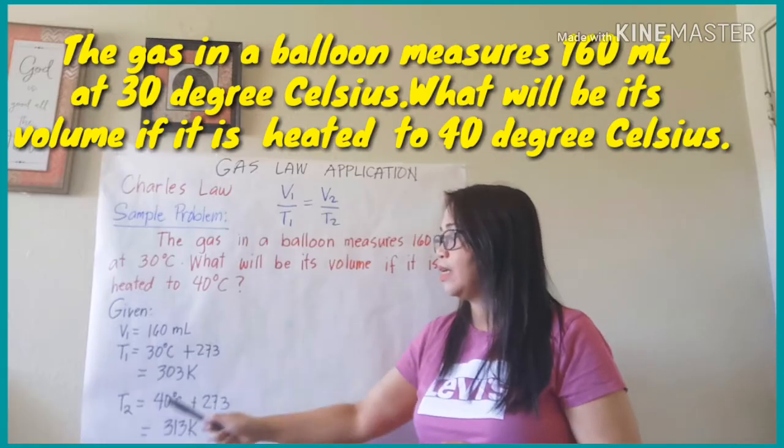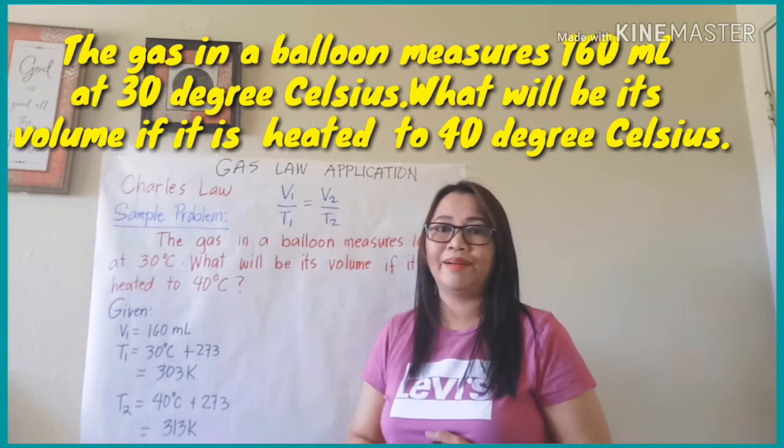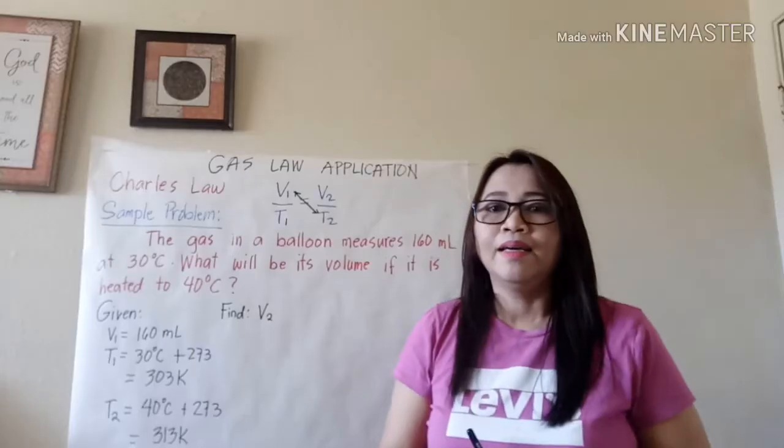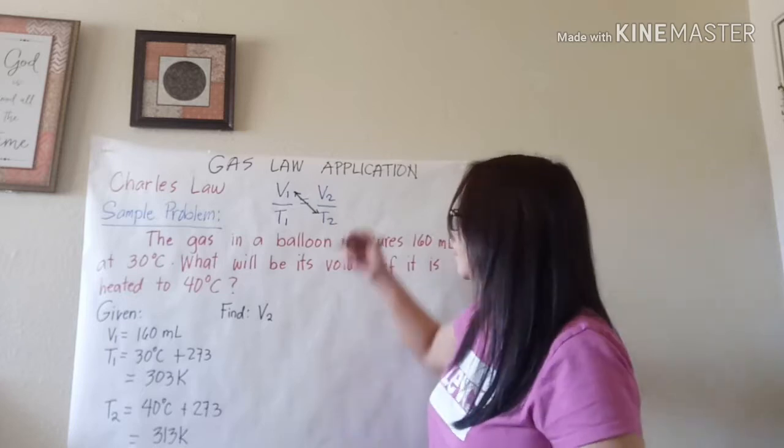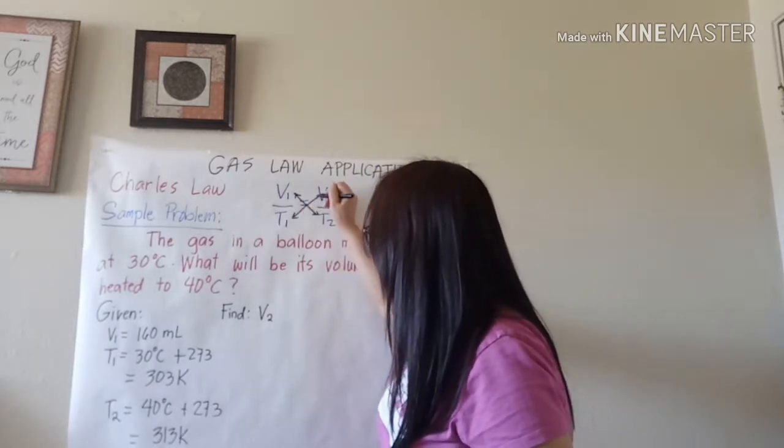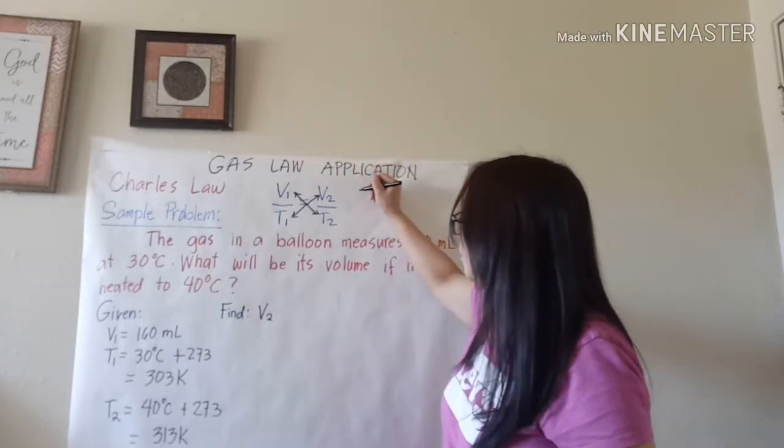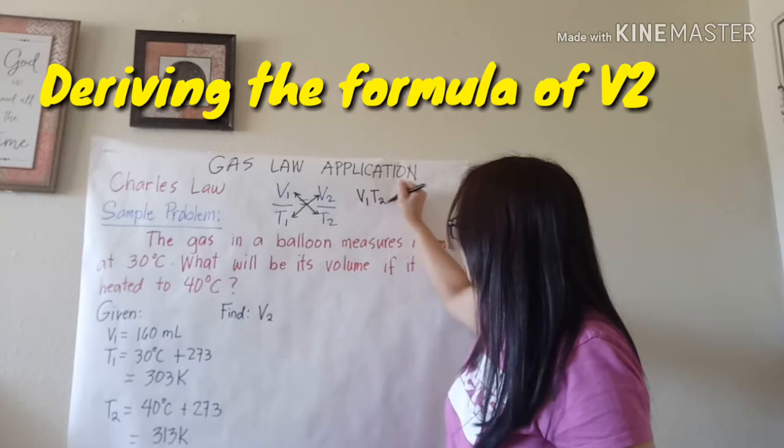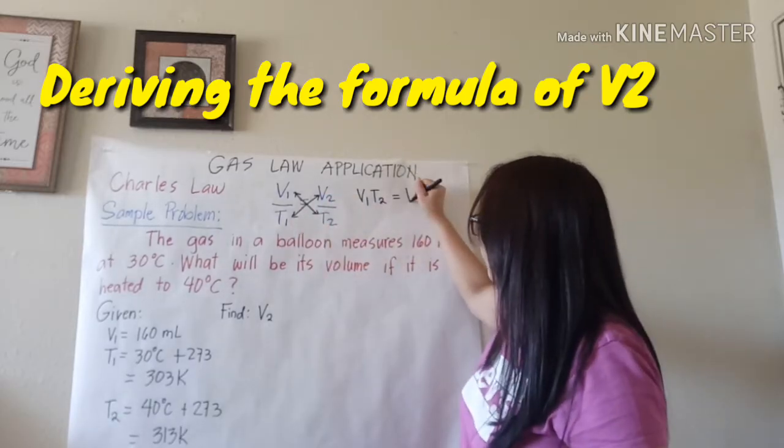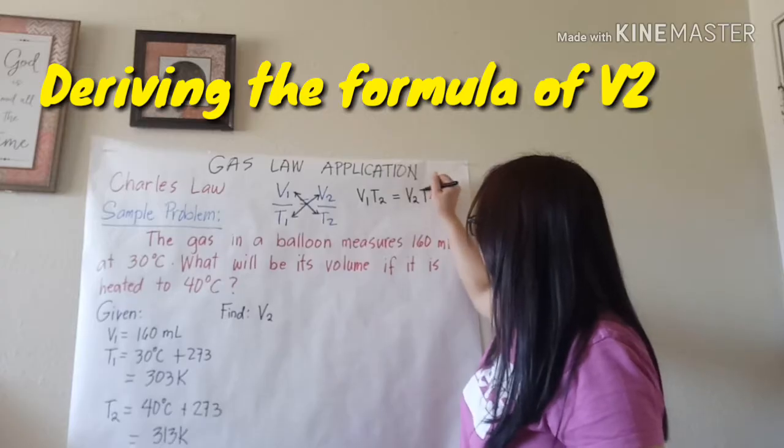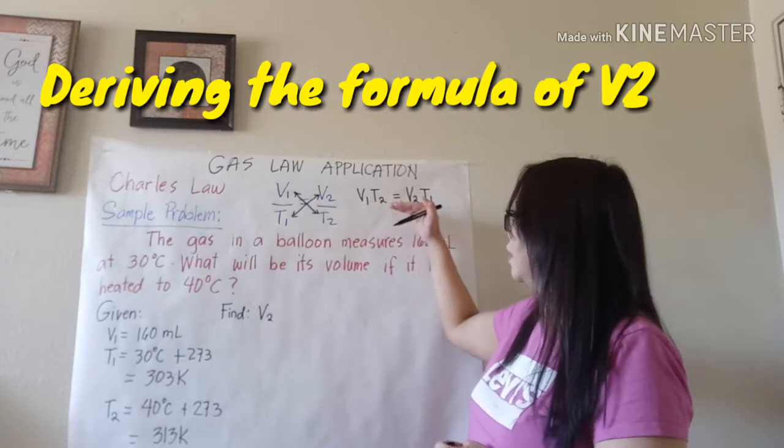All right, so we're going to apply cross multiplication. This is how you do cross multiplication: multiply V1 to T2, so you will get V1 T2 equals V2 times T1. So we'll get V2 T1. All right, so we have a new equation which is V1 T2 equals V2 times T1.